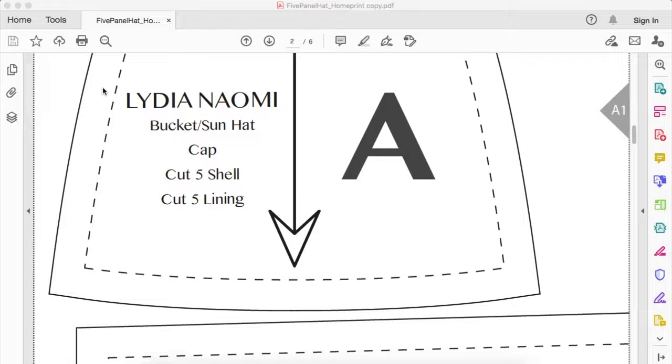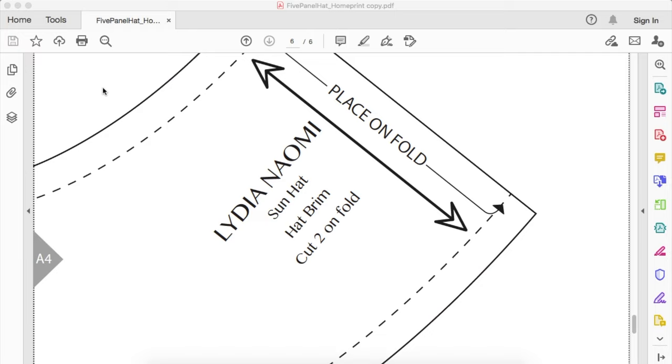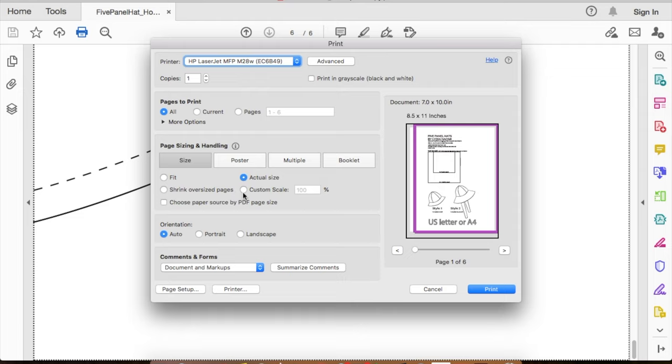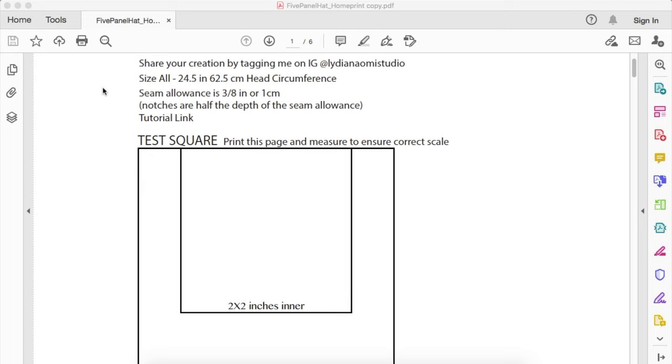I also have a tutorial linked below for how to print and assemble your pattern, so be sure to check that out if you feel any confusion at all. Whatever you do, make sure you print your file at actual size or 100% scale so that you don't alter the size of the pattern. There are test squares on the first page that you can measure to ensure you're printing correctly.